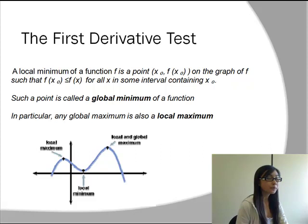So if we have a function and we have a point x₀ on the x-axis, if the corresponding y value for the x₀, which will be f(x₀), is less than or equal to f(x) for all x in some interval containing x₀, then this point at x₀ is considered to be a global minimum of a function.